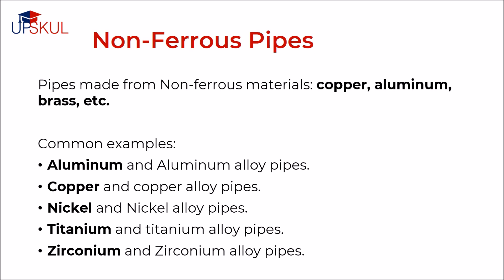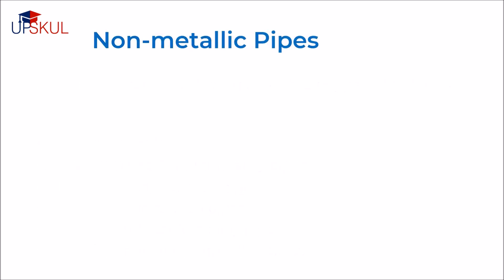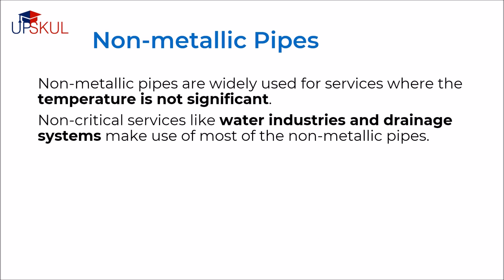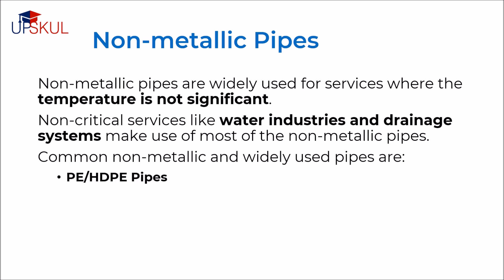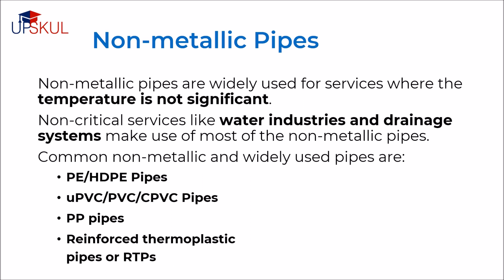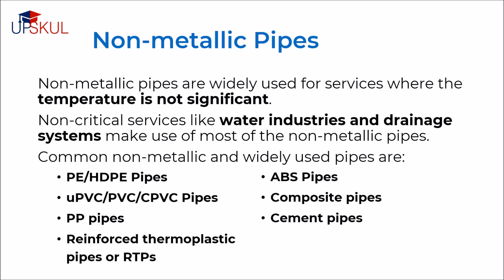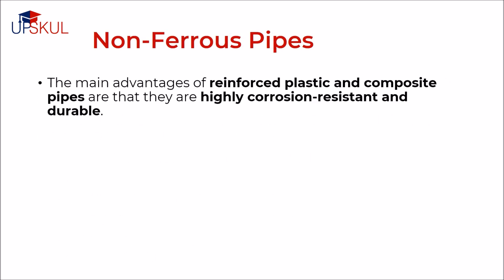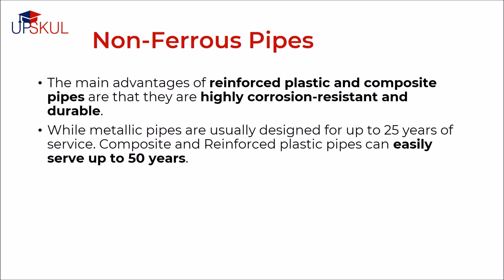Non-metallic pipes are widely used for services where temperature is not significant. Non-critical services like water industries and drainage systems make use of non-metallic pipes. Common non-metallic pipes could be PE or HDPE pipes, UPVC, PVC and CPVC pipes, polypropylene pipes, reinforced thermoplastic pipes or RTPs, ABS pipes, composite pipes like GRE, GRP, FRP pipes, cement and asbestos pipes, and vitrified clay pipes. The main advantages of reinforced plastic and composite pipes are that they are highly corrosion resistant and durable. While metallic pipes are usually designed for up to 25 years of service, composite and reinforced plastic pipes can easily serve up to 50 years.